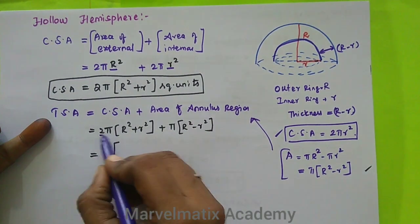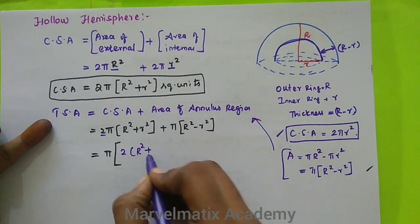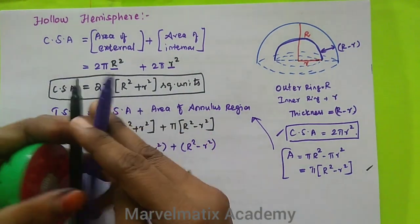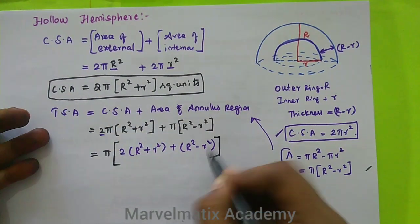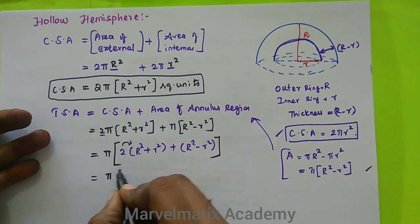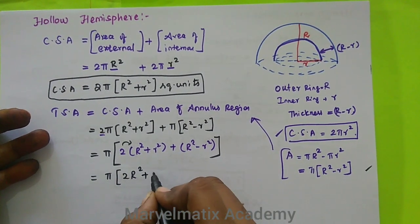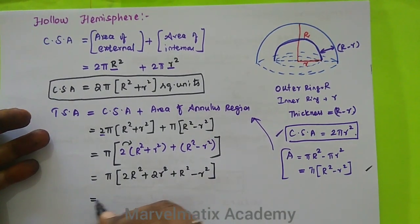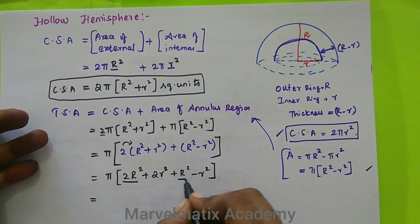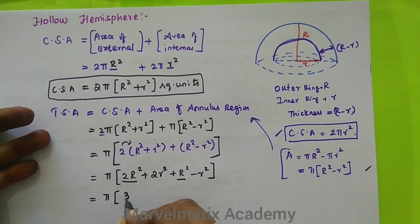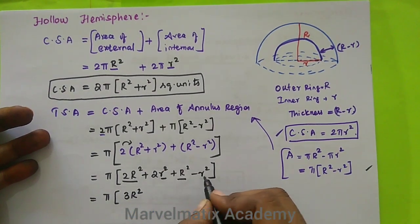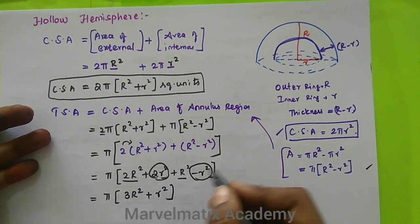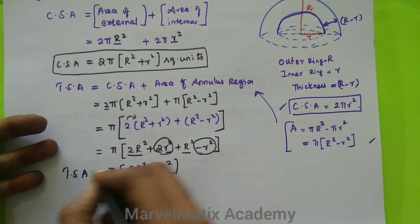So the remaining is 2 into R² plus r². Here we have 2R² minus r². So this equals π into 2R² plus 2r² plus R² minus r², which gives us π into 3R² plus r². This is the TSA formula.